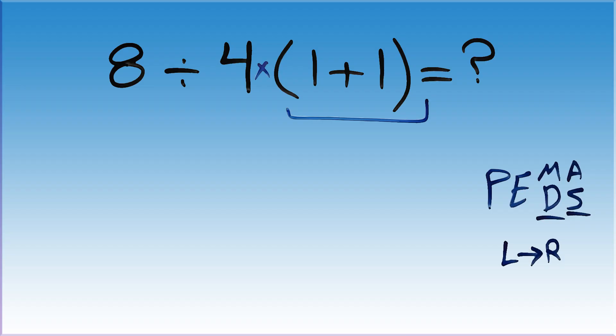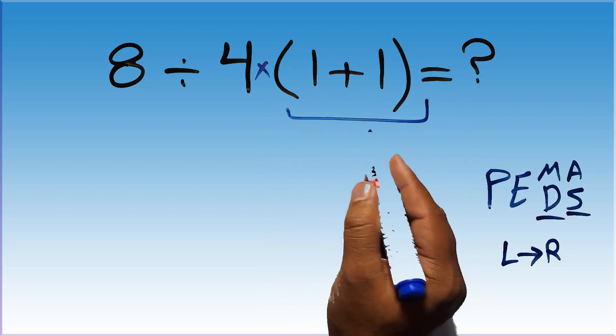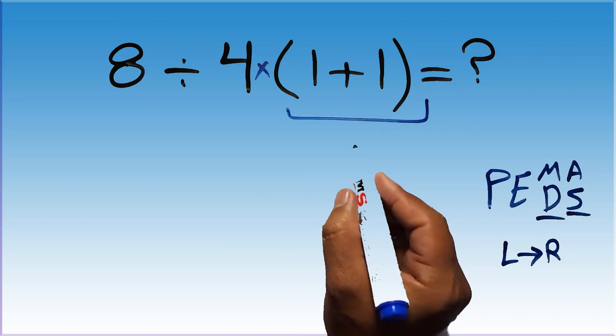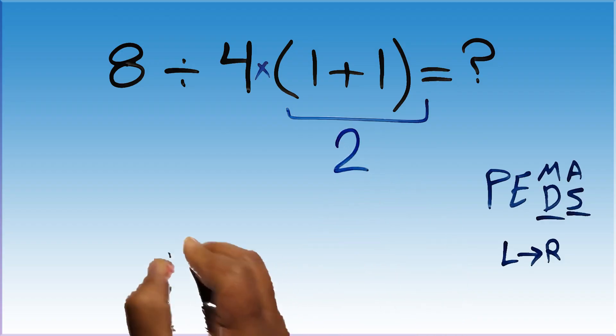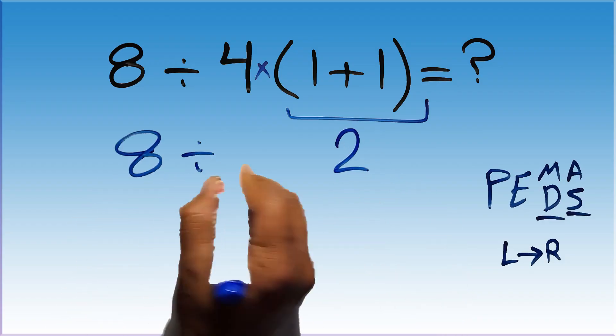So first these parentheses. Inside this parentheses we have 1 plus 1 which equals 2. So 8 divided by 4 times 2.